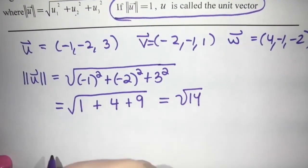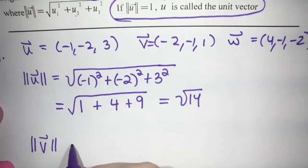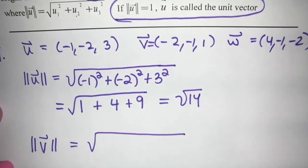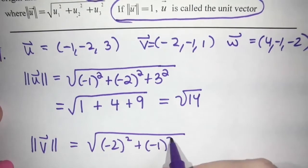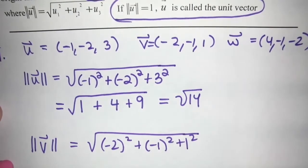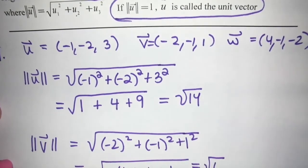So let's talk about the magnitude of V next. So V, we've got square root, we square all the components of V. So we have negative two squared plus negative one squared, plus one squared. And so we get four plus one plus one, which gives us root six.